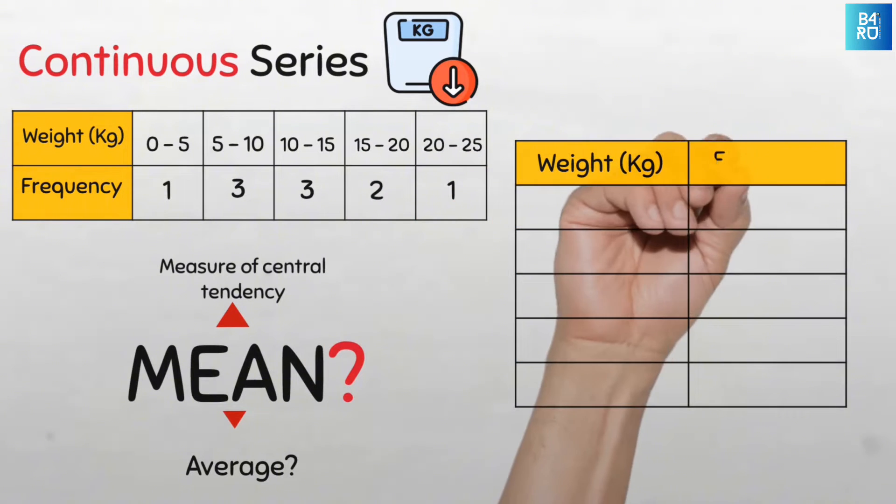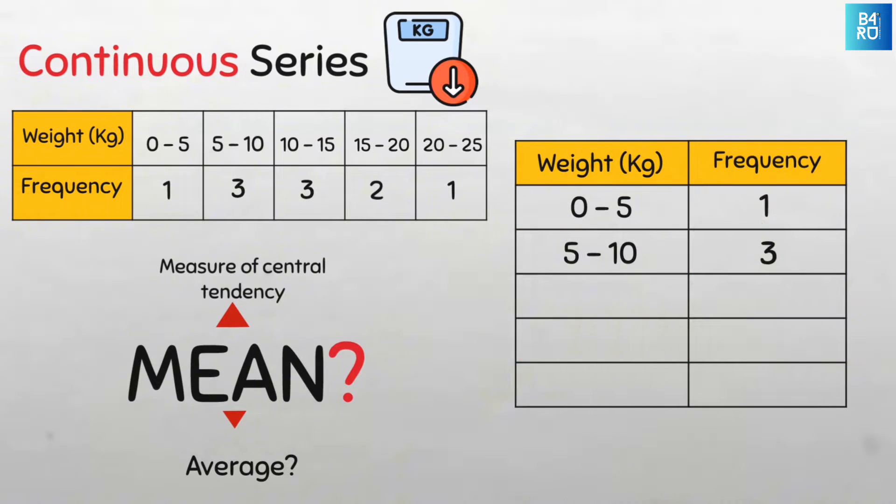Let's place the weights in kilograms here and the frequency here. And then we have all the data arranged neatly in a vertical manner.